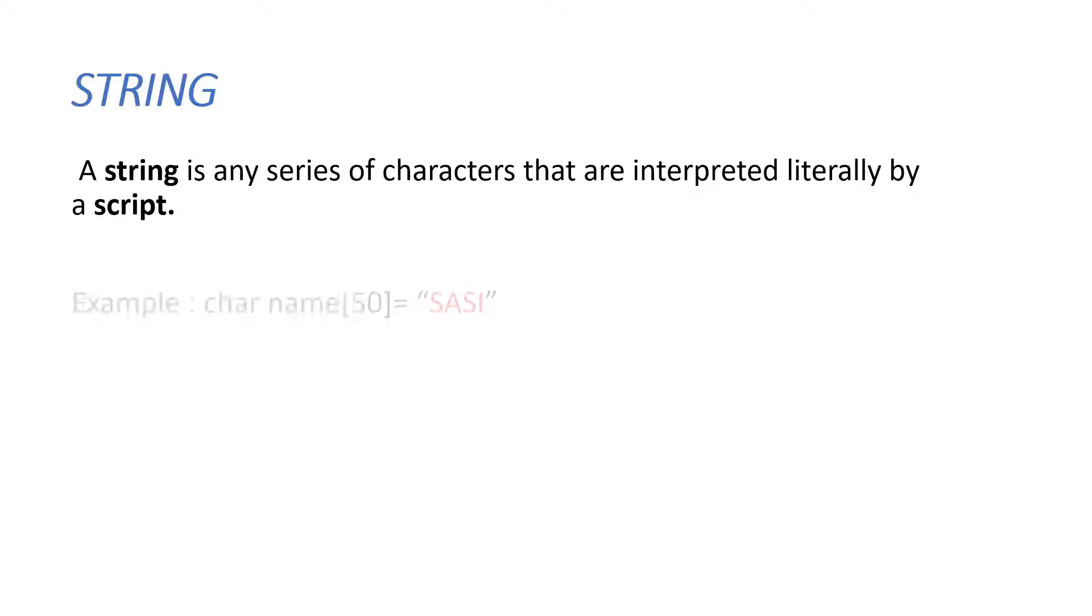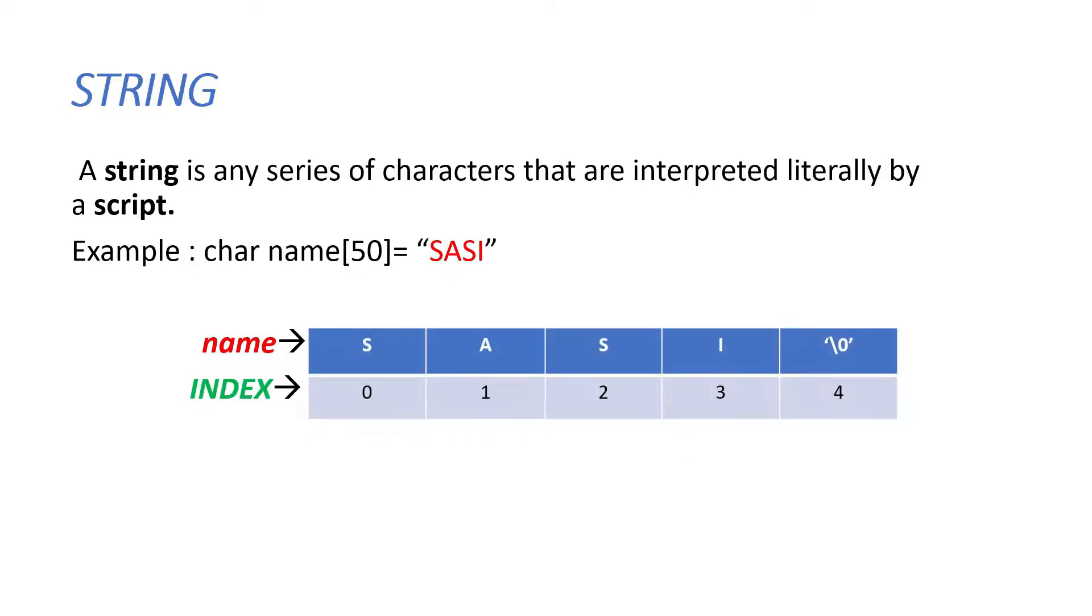For example, consider character array name of size 50, which is having a word SESI. Here it allocates memory like this in index 0, character S is stored, and in index 1 character A is stored, and characters S and I are stored in index 2 and 3 respectively.